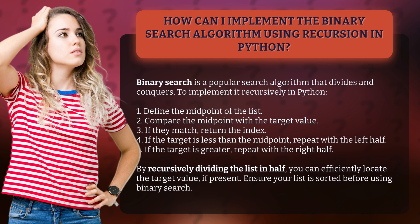1. Define the midpoint of the list. 2. Compare the midpoint with the target value. 3. If they match, return the index. 4. If the target is less than the midpoint, repeat with the left half.